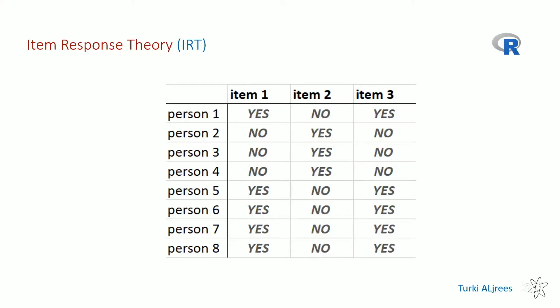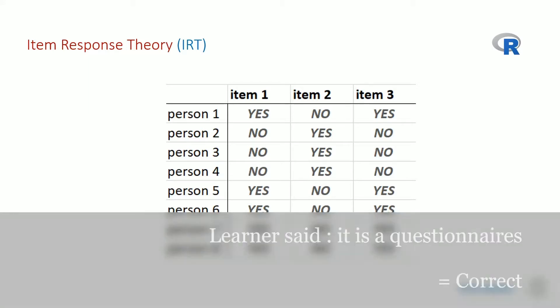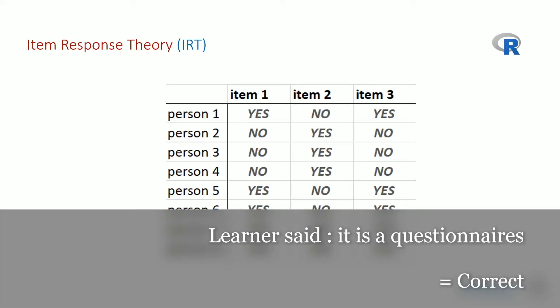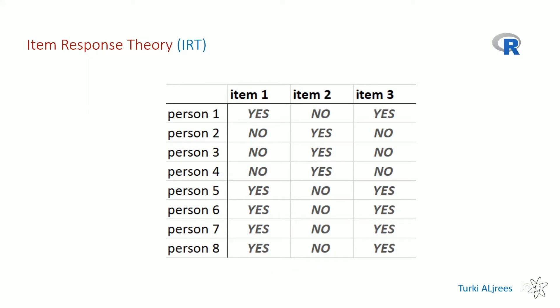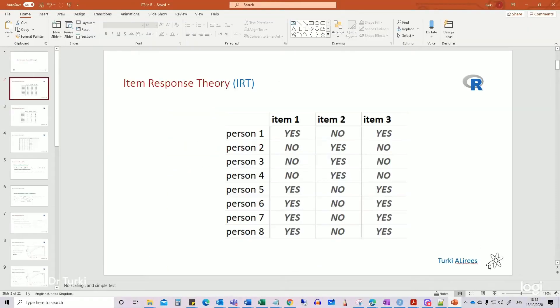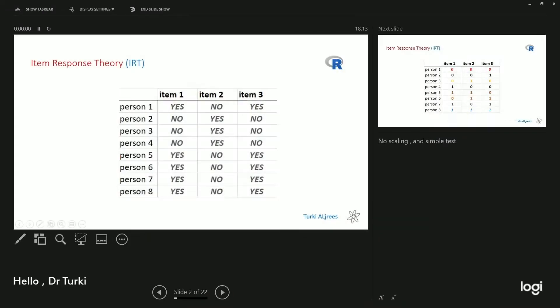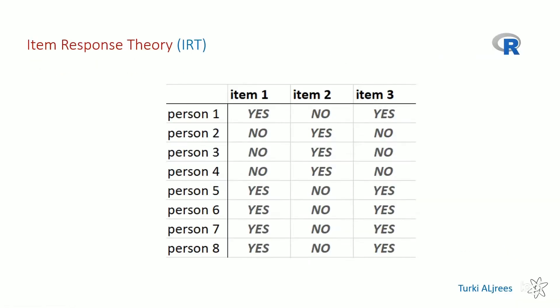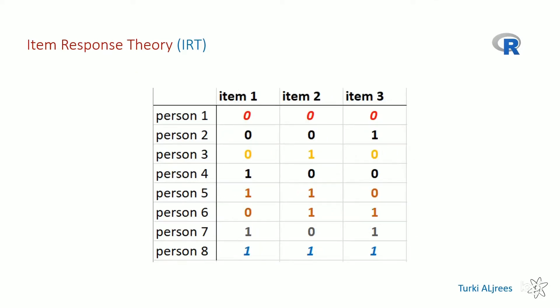What do you think this data is? What is the information here? We call this simple questionnaires. If we change the answers to zero and one, I will give you an example of data scaling. We can scale this data — we can score this data.